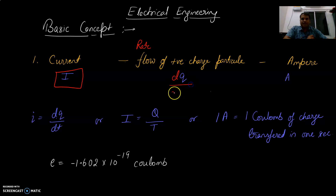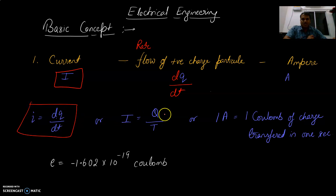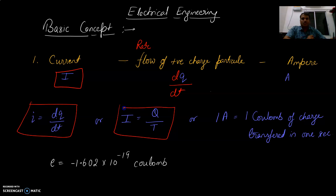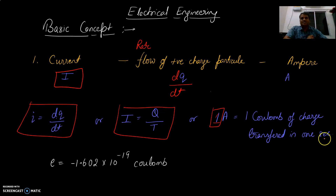We can write it as dQ/dt. That is, I is equal to dQ/dt. Or we can say the total charge passing through the element Q divided by the total time will be the current. We can also say 1 ampere is 1 coulomb of charge transferred in 1 second.